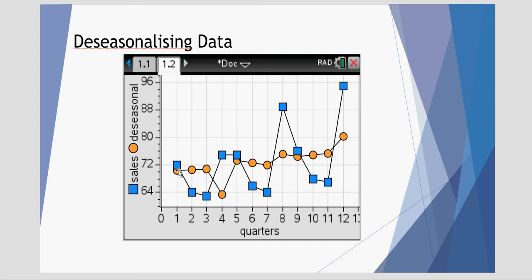Whereas that deseasonalized data is the yellow or orange circles. It's a lot less varying. And there's a general trend that goes upwards, as you can see.